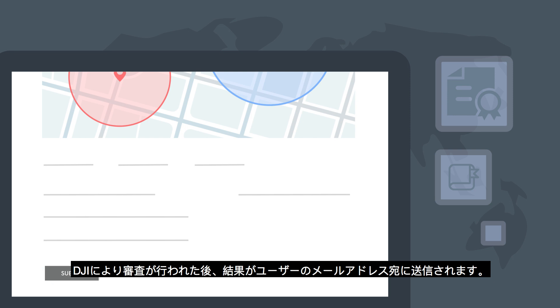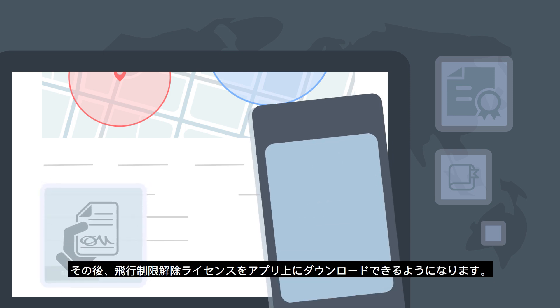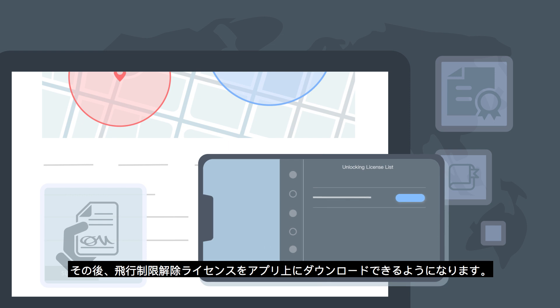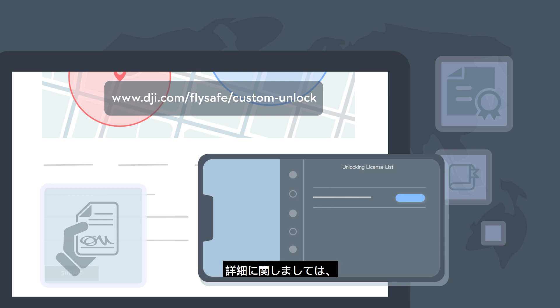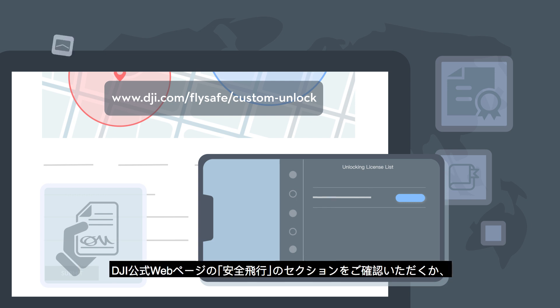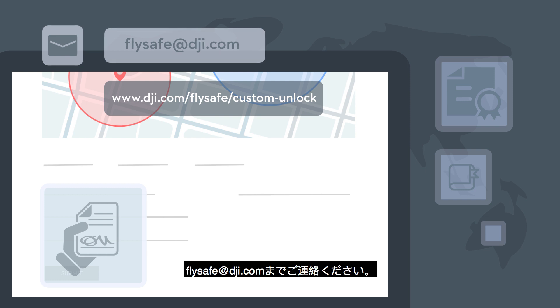After approval, an email copy of your request will be sent to you. You can then launch the app and download the unlocking license. The required documentation may differ depending on the type of the designated zone and flight purpose. For more details, visit DJI's website or send an email to flysafe@dji.com.